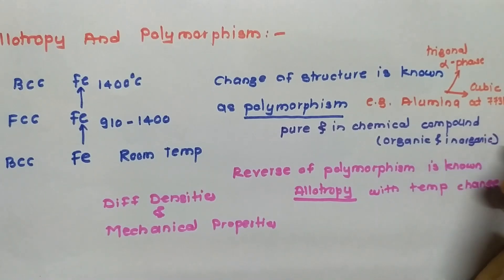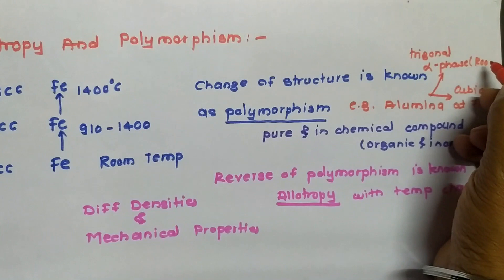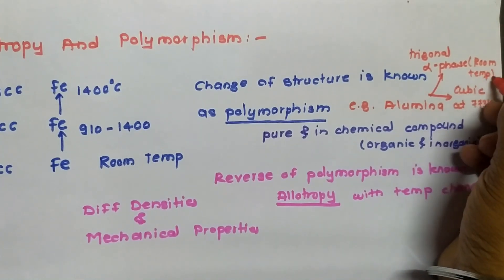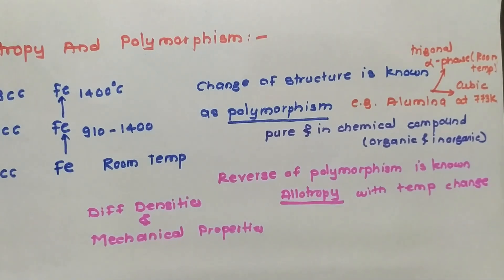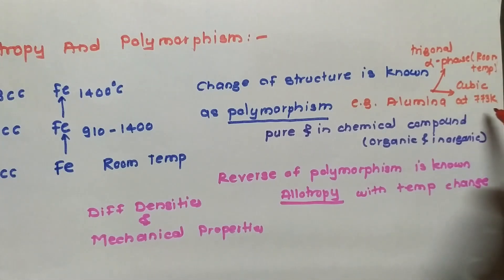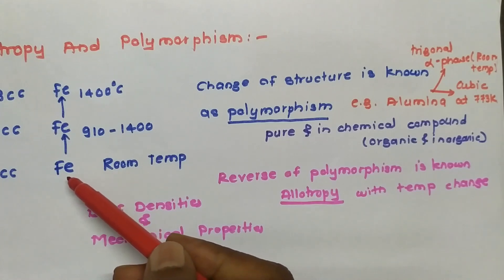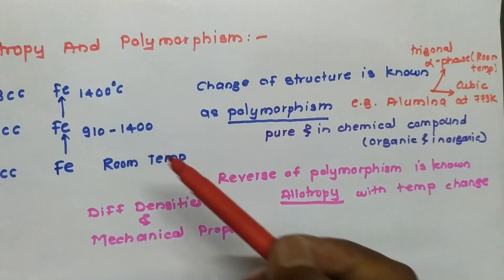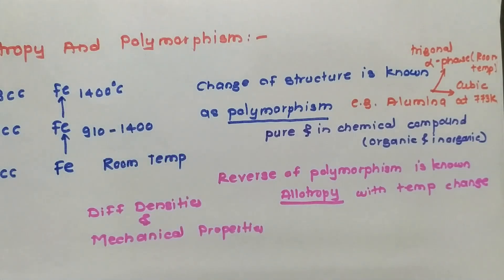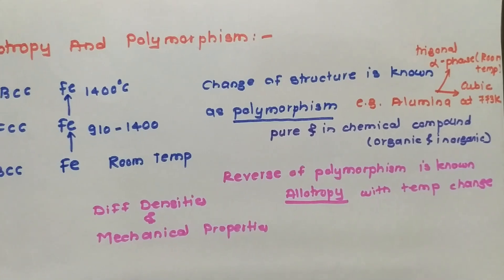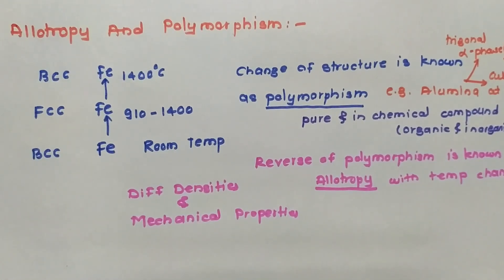For an example of allotropy, we can consider iron — Fe shows BCC structure, then FCC, then again BCC above 1400 degrees centigrade. This is overall regarding allotropy and polymorphism. Thank you so much — the next part will be studied in the next lecture.